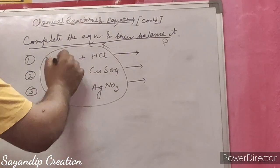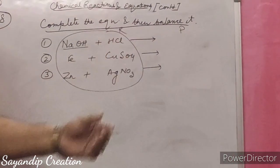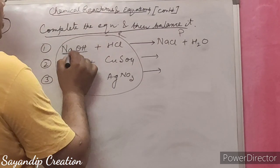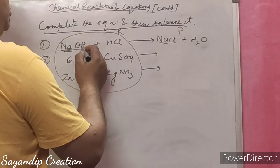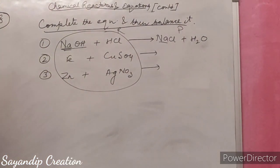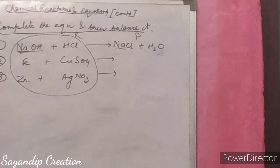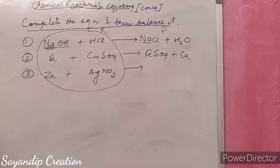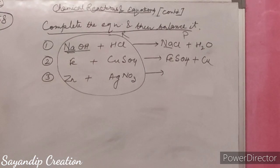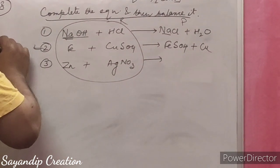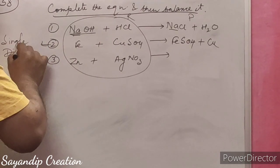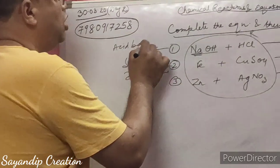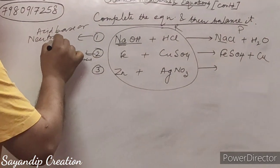NaOH is a base and HCl is an acid, so when they react: NaOH + HCl → NaCl + H2O. Check: Na=1, O=1, H=2, Cl=1 on both sides — it is balanced. This is called a neutralization reaction or acid-base reaction. Second: iron reacts with copper sulfate to form FeSO4 + Cu. Iron displaces copper from copper sulfate solution, forming ferrous sulfate plus copper. This is called a single displacement reaction.